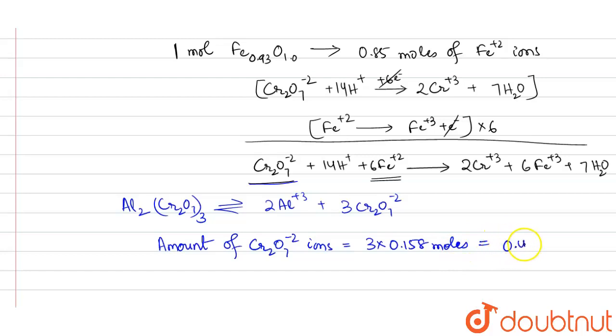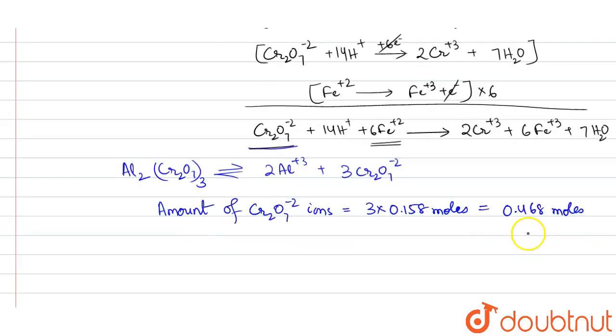Now 0.468 moles will be oxidizing 6 into 0.468 Fe²⁺ ions, so the amount of Fe²⁺ oxidized is equal to 0.468 into 6.